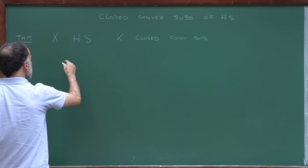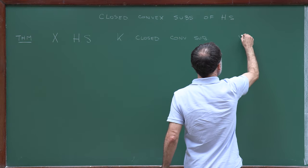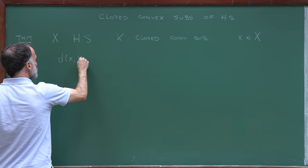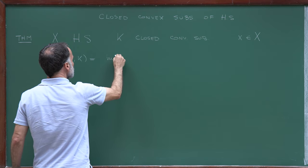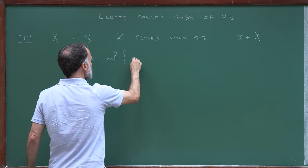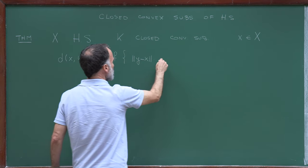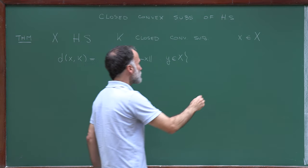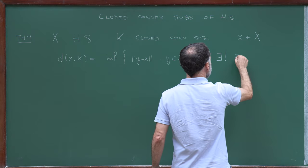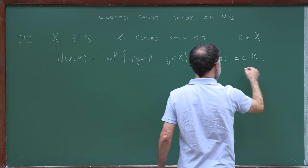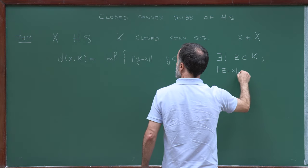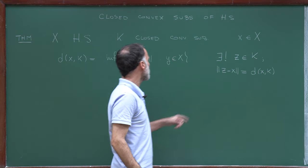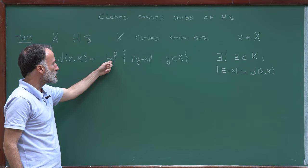We can define, if you take a point X in X, the distance from X to K as the infimum over all Y in K of the norm of Y minus X. My claim is that there exists a unique Z in K such that the distance from Z to X is equal to the distance from X to K. So there is a Z in K which minimizes this infimum — the infimum is actually a minimum.